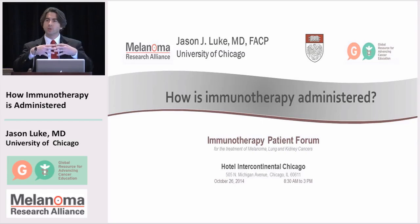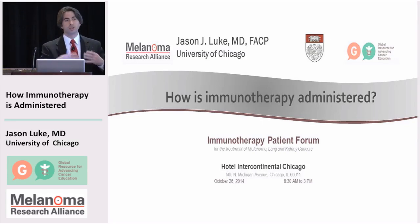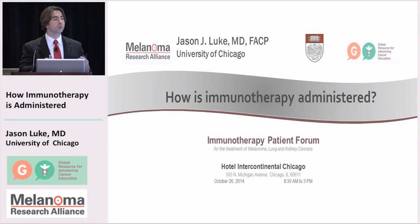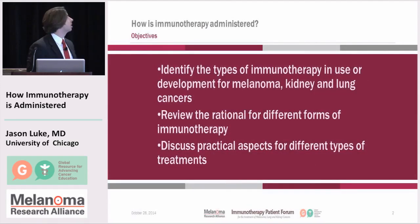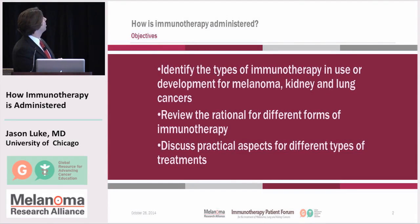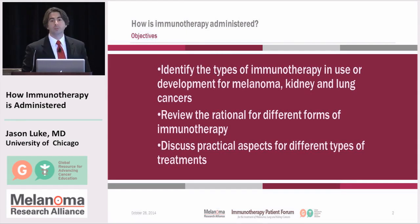I'm going to try to integrate those two things, because I think understanding how this is actually done, practically speaking, is really dependent on understanding why it is that we're doing this. For my talk today, we're going to try to cover three things: identify the types of immunotherapy in use and in development for melanoma, kidney, and lung cancers; review the rationale for the different kinds of immunotherapy; and discuss the practical aspects of these different types of treatments.